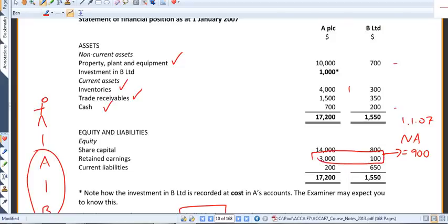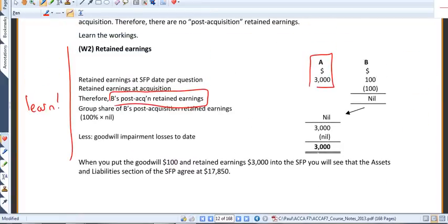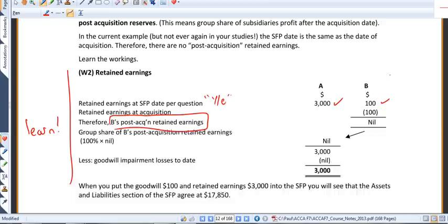Given to us in the question, A had reserves of 3,000, and B has reserves of 100. So I'm going to put those figures straight from the question at the year-end, if you like, 3,100.